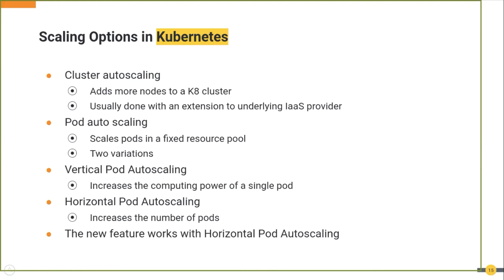Alternatively, you can run a fixed set of pods but with certain restrictions on CPU and memory. You can specify the maximum CPU and memory needed by each pod without specifying the actual resources assigned. In such a case, the Vertical Pod Autoscaler can automatically look at CPU and memory requests and adjust the pods automatically. In short, horizontal autoscaling is responsible for creating new pods and vertical autoscaling is responsible for changing the specifications of the pods.